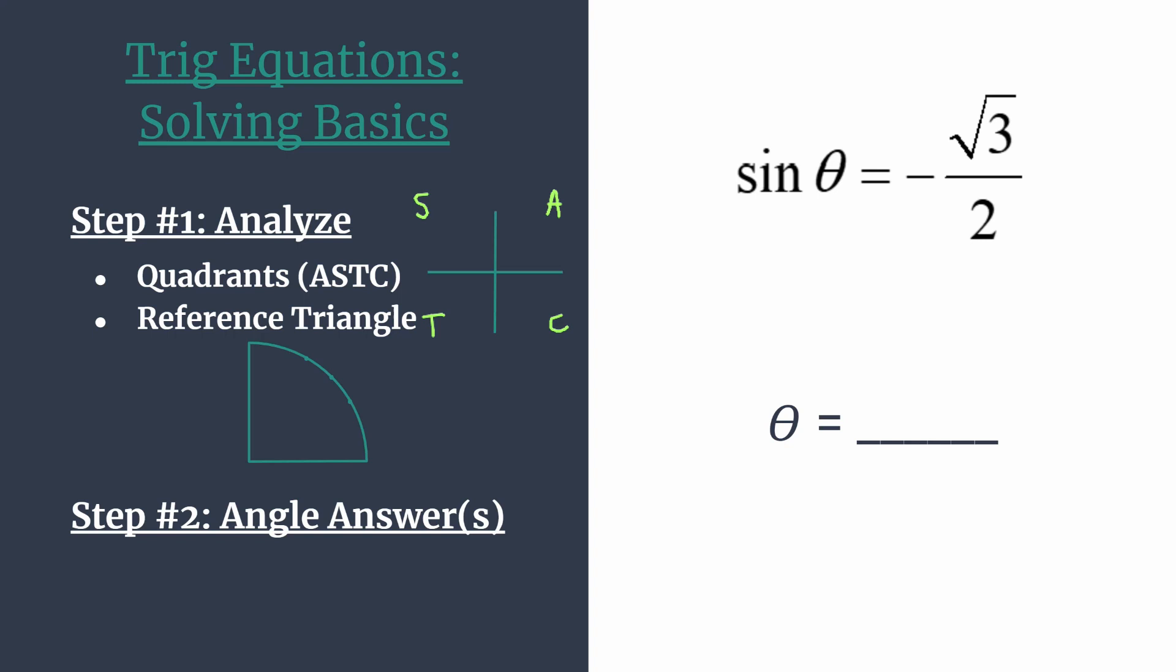In quadrant 1, all of them are positive, all 6. In quadrant 2, only sine and its reciprocal cosecant are positive. All the rest are negative. Hopefully, you can make the jump. In quadrant 3, it's tangent and cotangent that are positive. And in quadrant 4, it's cosine and its reciprocal secant.